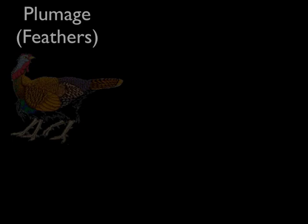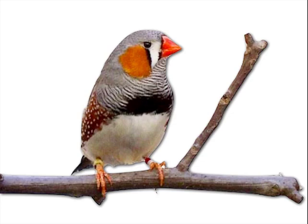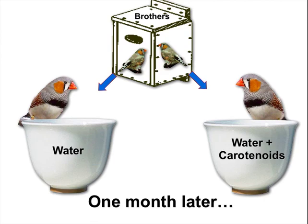Carotenoids are chemicals that we get from our diet, and they give color to various types of objects — to feathers, to lobster shells, to birds' beaks. In this particular study, the authors were investigating the role of carotenoids in mate choice in zebra finches. So here's a male zebra finch. What they did was take brothers from the same nest box to control for familial effects. Some of the males were given just the usual water in addition to the food, while others had water with added carotenoids.